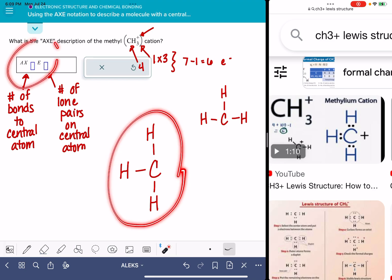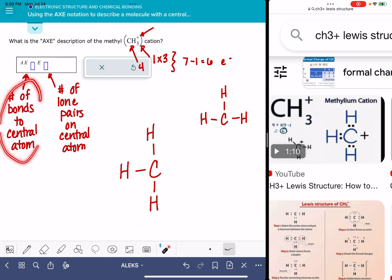So for this molecule to fill in the AXE notation, I need to count the number of bonds to the central atom. That's going to be one, two, three bonds to the central atom. And the number of lone pairs on the central atom, that is a zero.